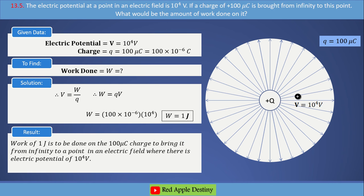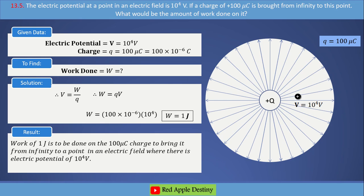Hence, work of 1 joule is to be done on the 100 microcoulomb charge to bring it from infinity to a point in an electric field where there is an electric potential of 10⁴ volts. Now numerical 13.6.